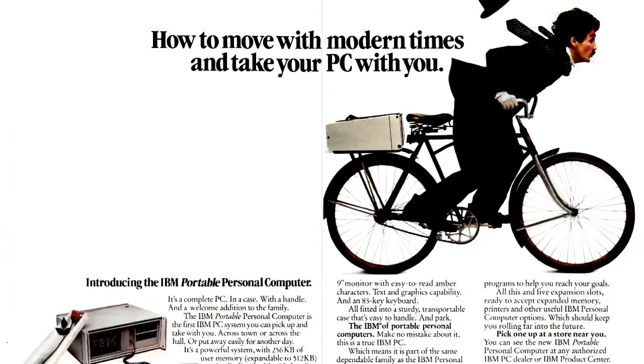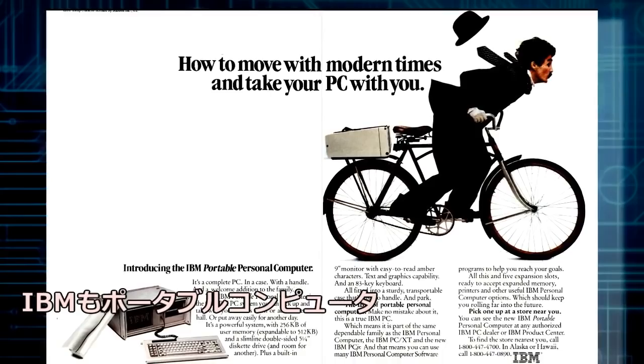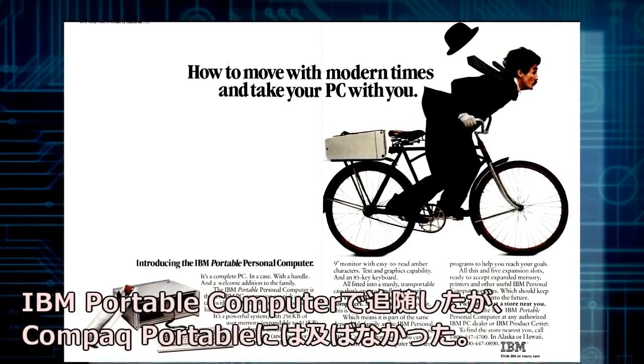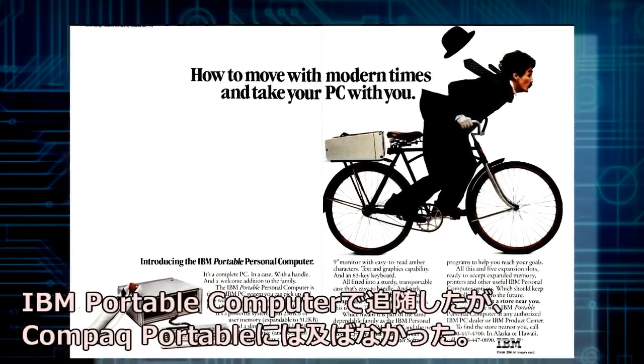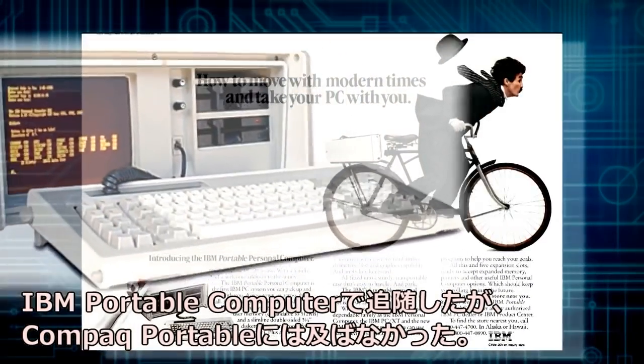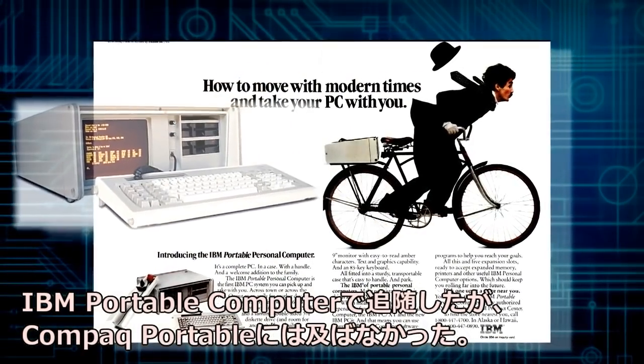コンパック・ポータブルの人気は凄まじいもので、初年度に5万3千台が販売され、260億円の売上を記録。すごい！IBMもポータブルコンピューター「IBM ポータブル コンピューター」で追随したが、コンパック・ポータブルには及ばなかった。